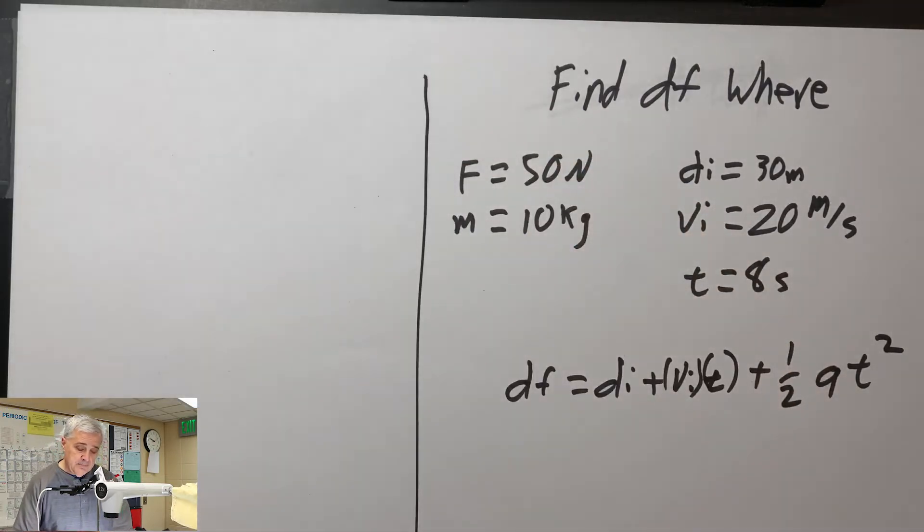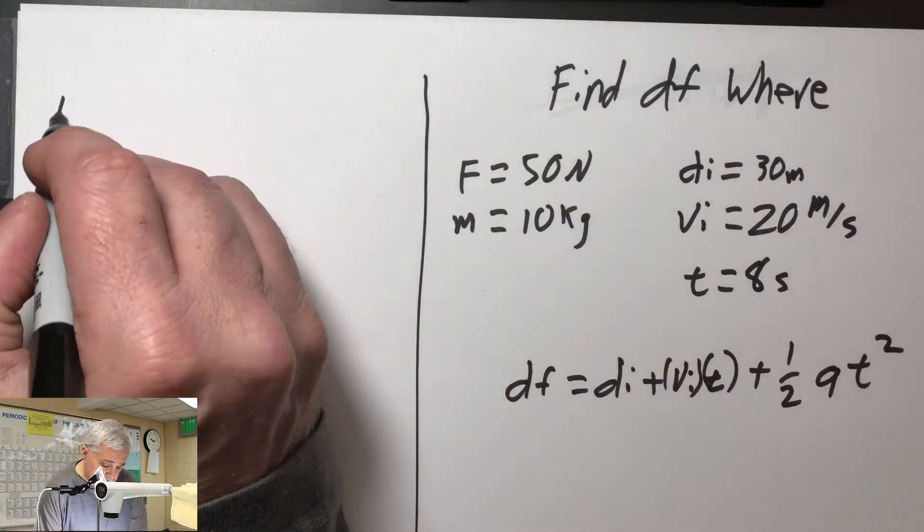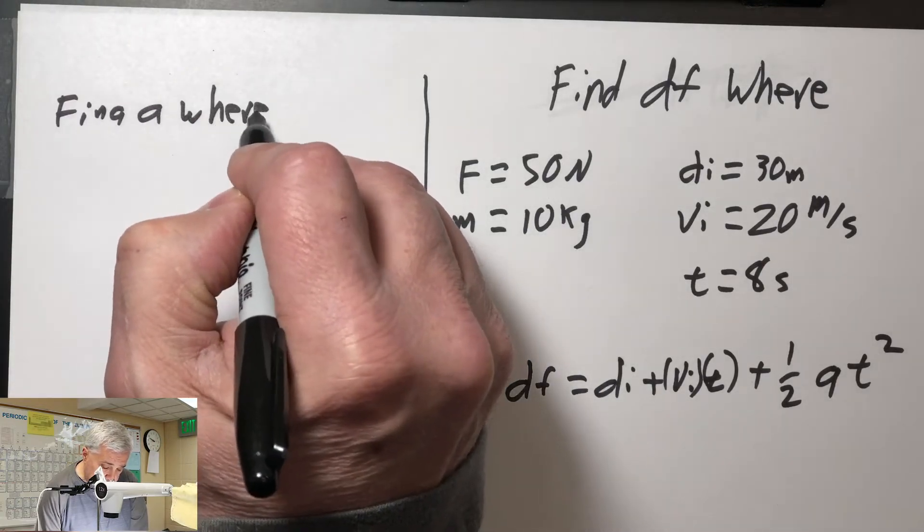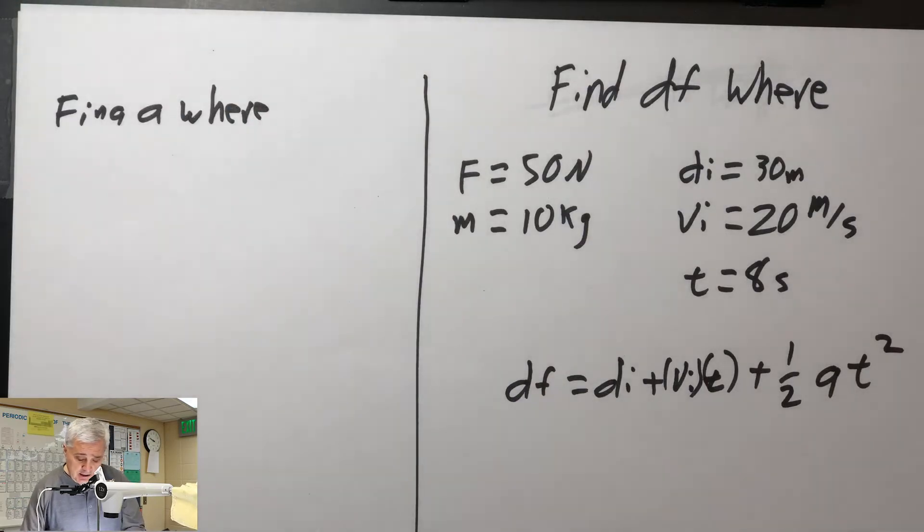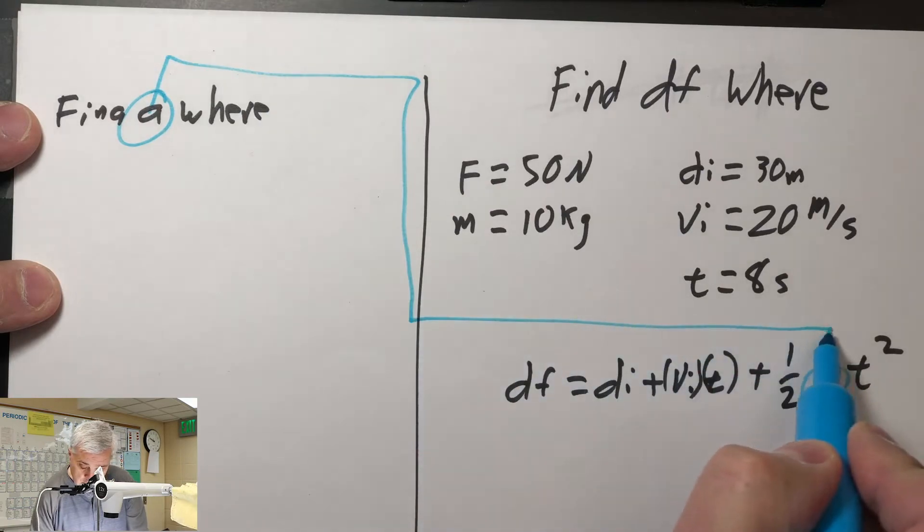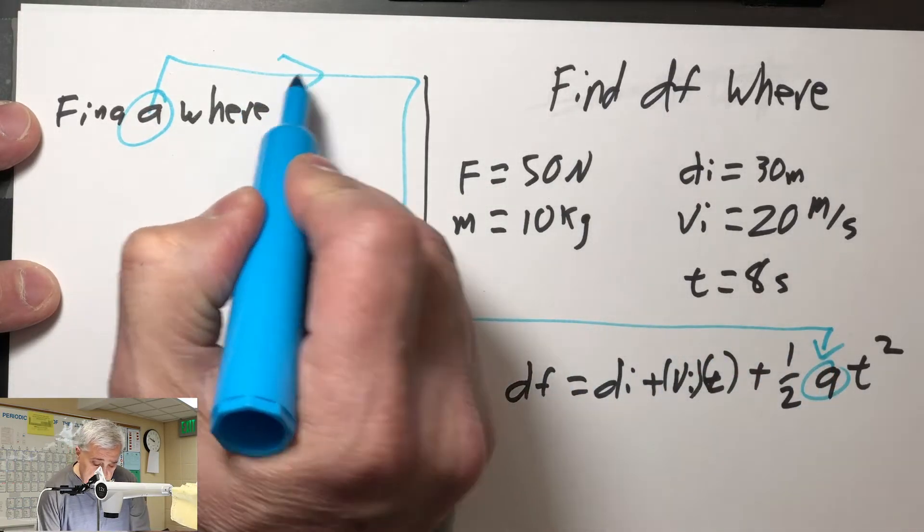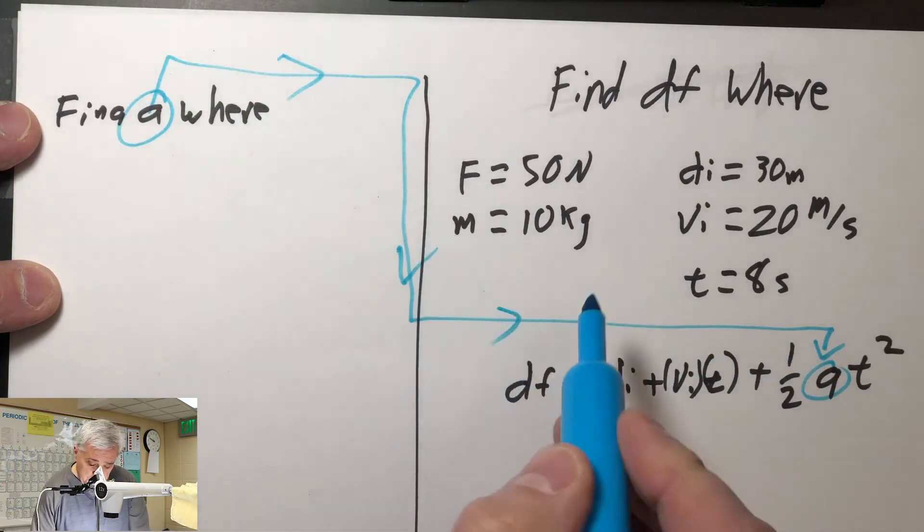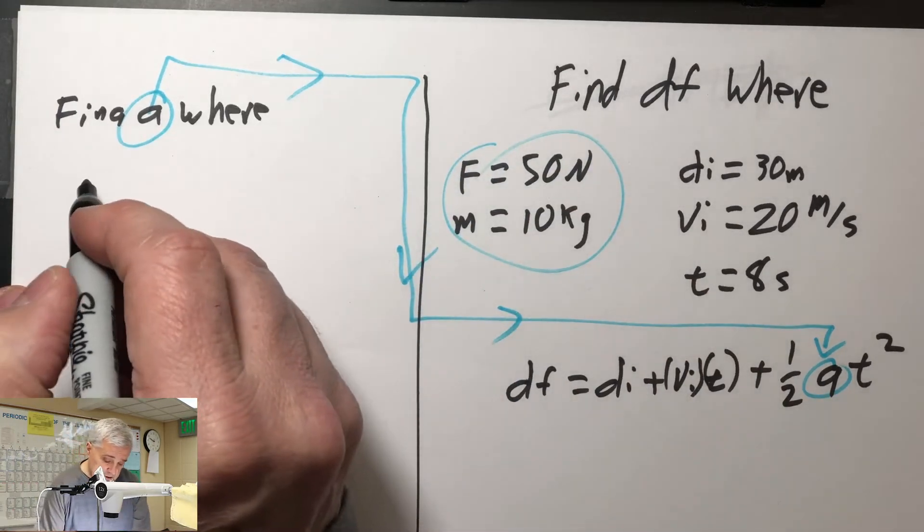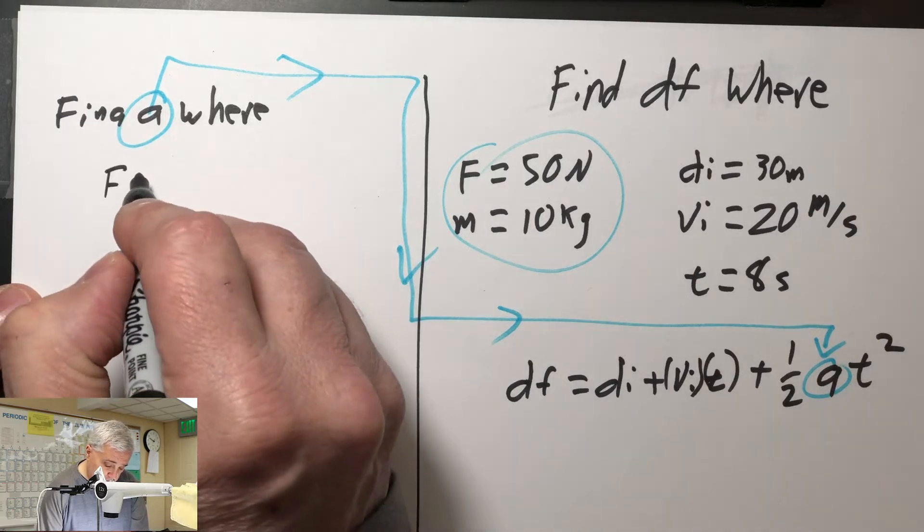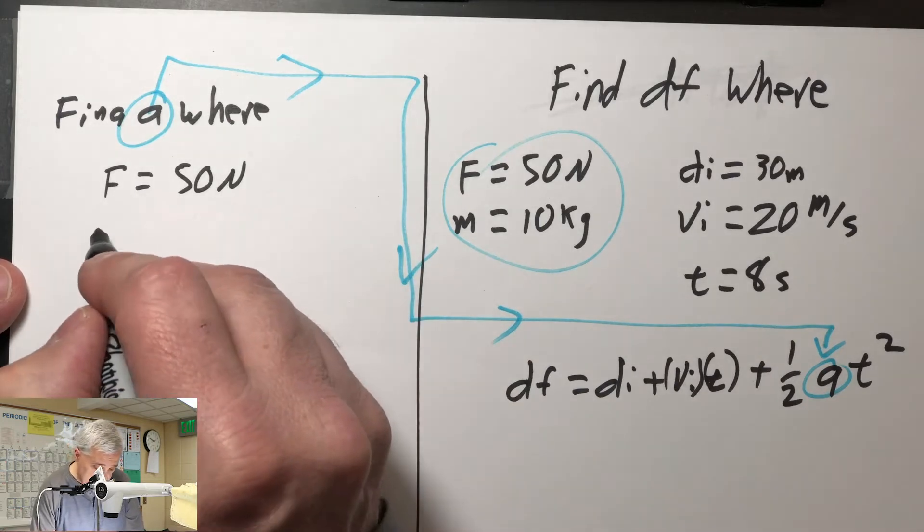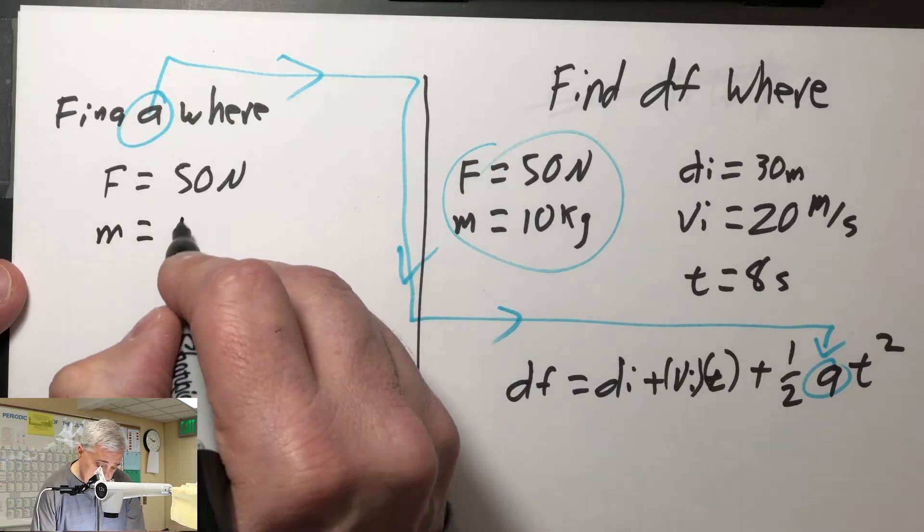So I'm going to do this little line thing, and I'm going to jump over here, and I'm going to say find a where, because I need to use this a in this place. So I'm going to need to calculate a using this information. Just to be verbose, I'm going to put f equals 50 newtons. And if you don't know what verbose means, you can look that up. That's a good SAT word.